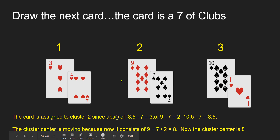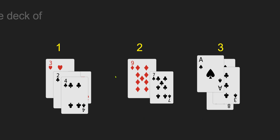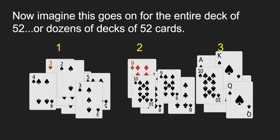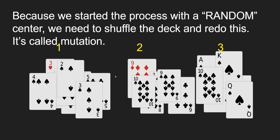Nine plus seven equals 16, divide by two is eight — the cluster center is now eight, so it actually went down. Just imagine a scatter diagram; this bubble is moving. Now imagine we went through 52 cards or dozens of decks. Because we started with a random center, we need to shuffle the deck and redo this whole thing — like playing solitaire where near the end of the deck you pile it back up and try again. We want to reduce the overall distance of all the cards out there.